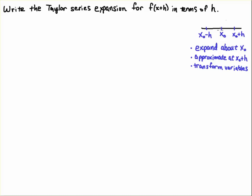So we're going to focus on the approximation forward from the x naught. So we're going to expand about x naught, and then we're going to approximate it x naught plus h, and then you'll see I'm going to transform variables so that we get things in terms of f of x plus h, which is how you usually see the expansion in a textbook.